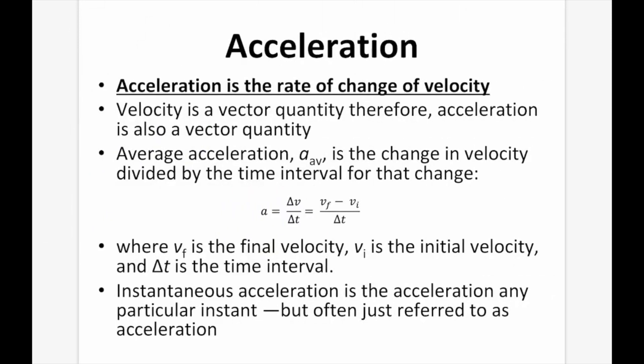Acceleration is the rate of change of velocity. Velocity is a vector quantity, and therefore acceleration is also a vector quantity. Average acceleration is the change in velocity divided by the time interval for that change — velocity final minus velocity initial, over delta t. Instantaneous acceleration is the acceleration at any particular instant, but is often referred to simply as acceleration.